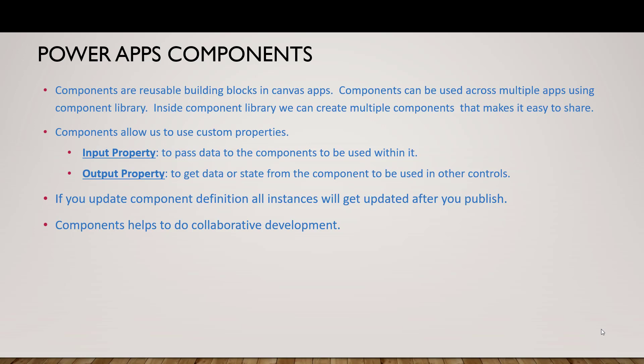Input property is used to pass data to the component to be used within it. Output property is used to get data or state from the component. If you want to make it configurable, we use an input property — this is what we pass from the app to the component. Output property is what the component passes back to the app.